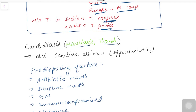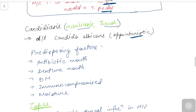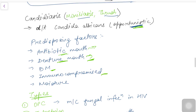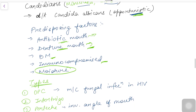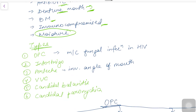Next we discuss candidiasis, also known as moniliasis or thrush. It is caused by Candida albicans, an opportunistic pathogen normally present on skin. Predisposing factors include antibiotic mouth (prolonged antibiotics destroy normal flora, allowing Candida to overgrow), denture mouth (ill-fitting dentures create moist areas), diabetes, immunocompromised states, and areas of moisture — Candida loves moisture.